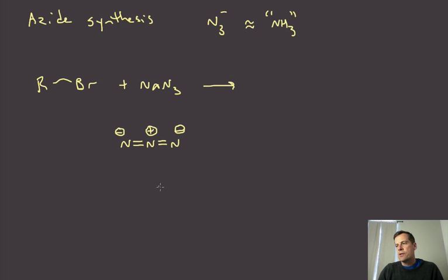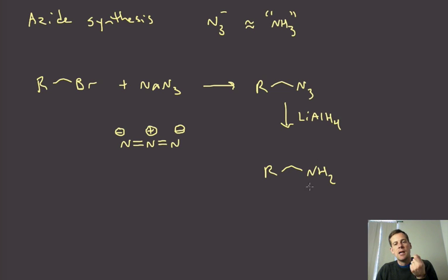So azide is going to do an SN2 on that alkyl halide, and that's going to then give us the alkyl azide. And then what we can do is treat this with lithium aluminum hydride. Strong reducing conditions. And that will reduce the azide all the way down to the primary amine. So you can see here that this now in these two steps gives us the product that looks as if like we had used ammonia to alkylate by that alkyl halide. But this is very selective because the azide can't be alkylated more than once. So that's why it's selective.